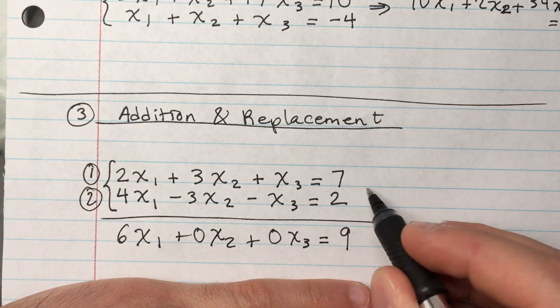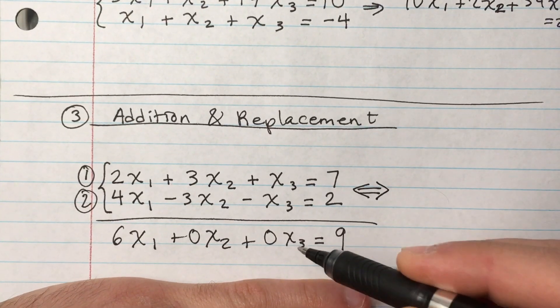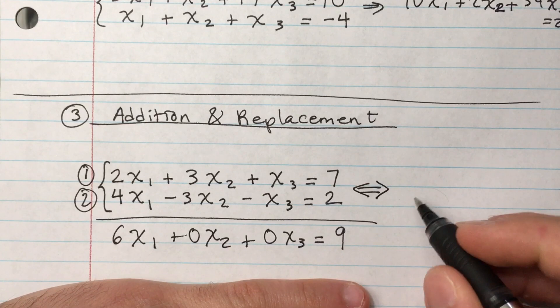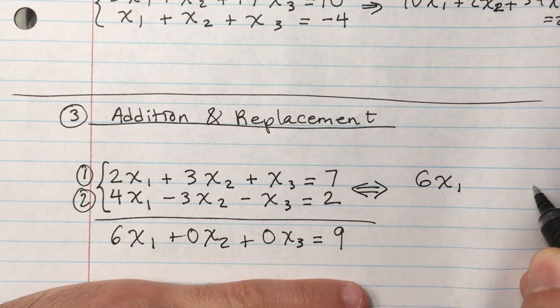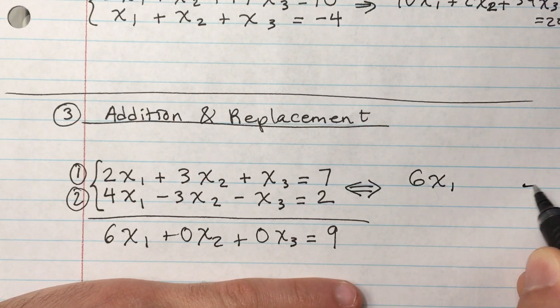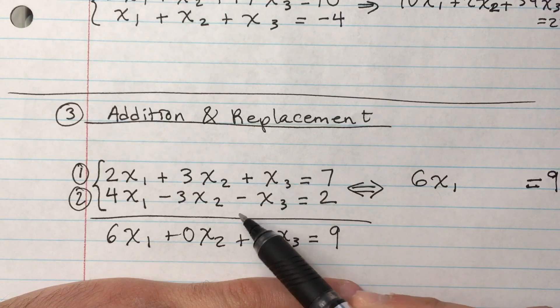So okay, I'm going to write the equivalent side. Let's say I'm going to choose to replace this resultant equation with equation 1. I would get 6x₁, we'll just leave a gap showing that we cancelled x₂ and x₃, equals 9.